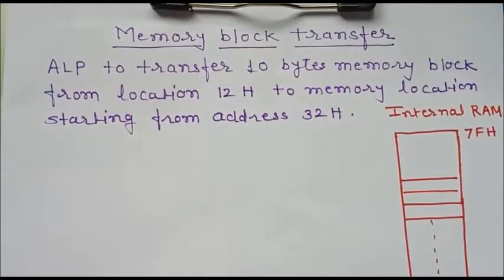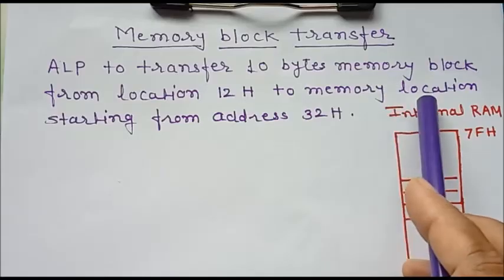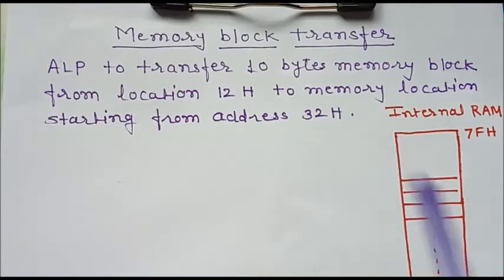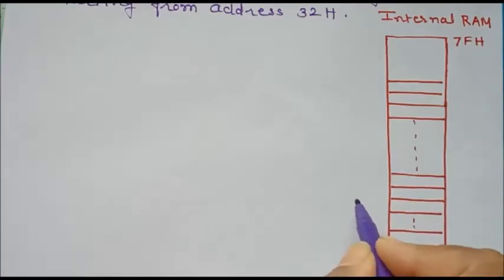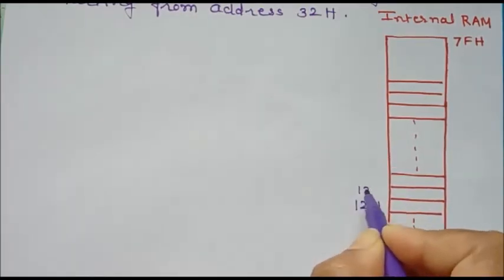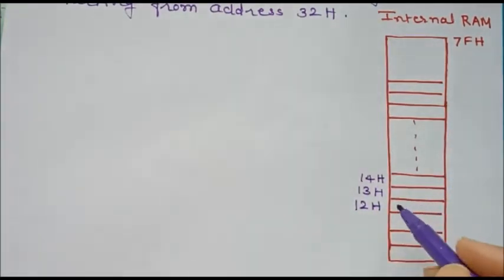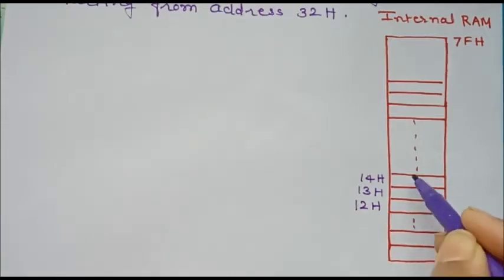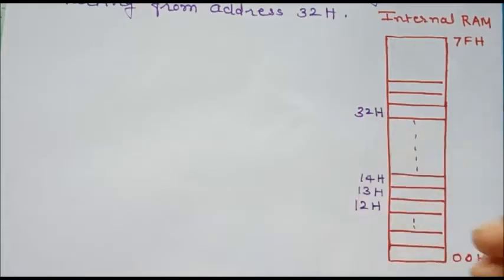Write an assembly language program to transfer 10 bytes of a memory block starting from location 12H to memory locations starting from address 32H. Suppose this is the internal RAM organization of 8051 memory. Starting at address 12H, the next address will be 13H, 14H, and so on — 10 bytes total. We want to transfer this data to the address starting from 32H.